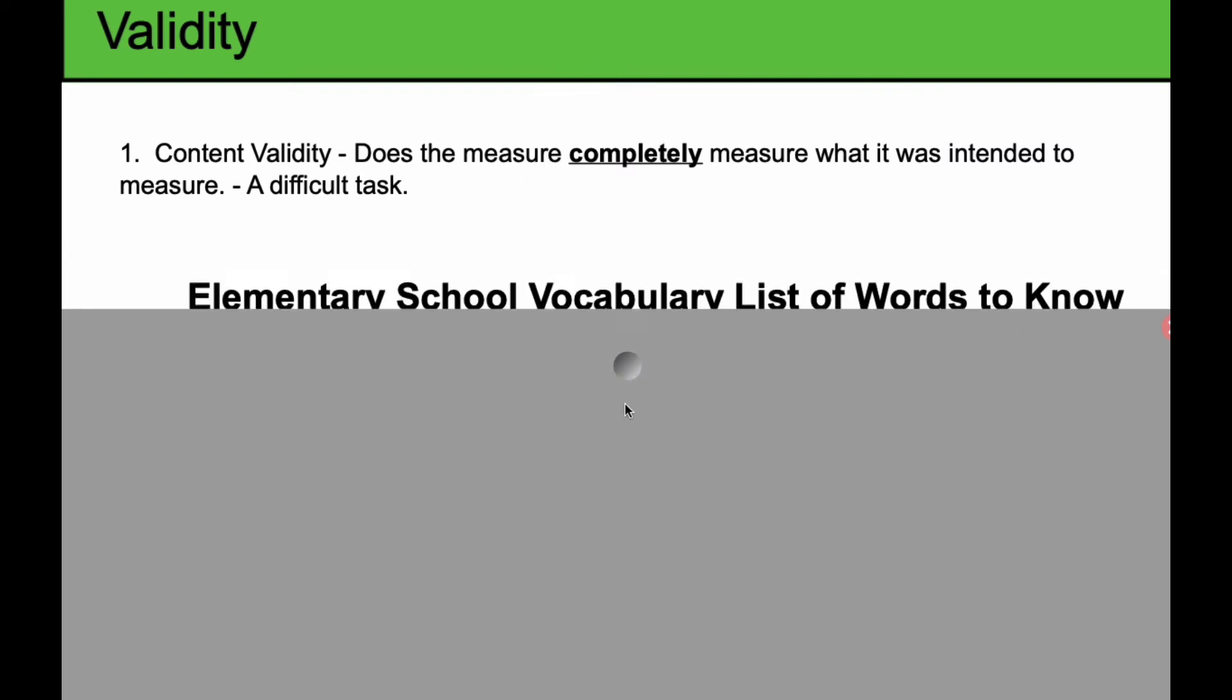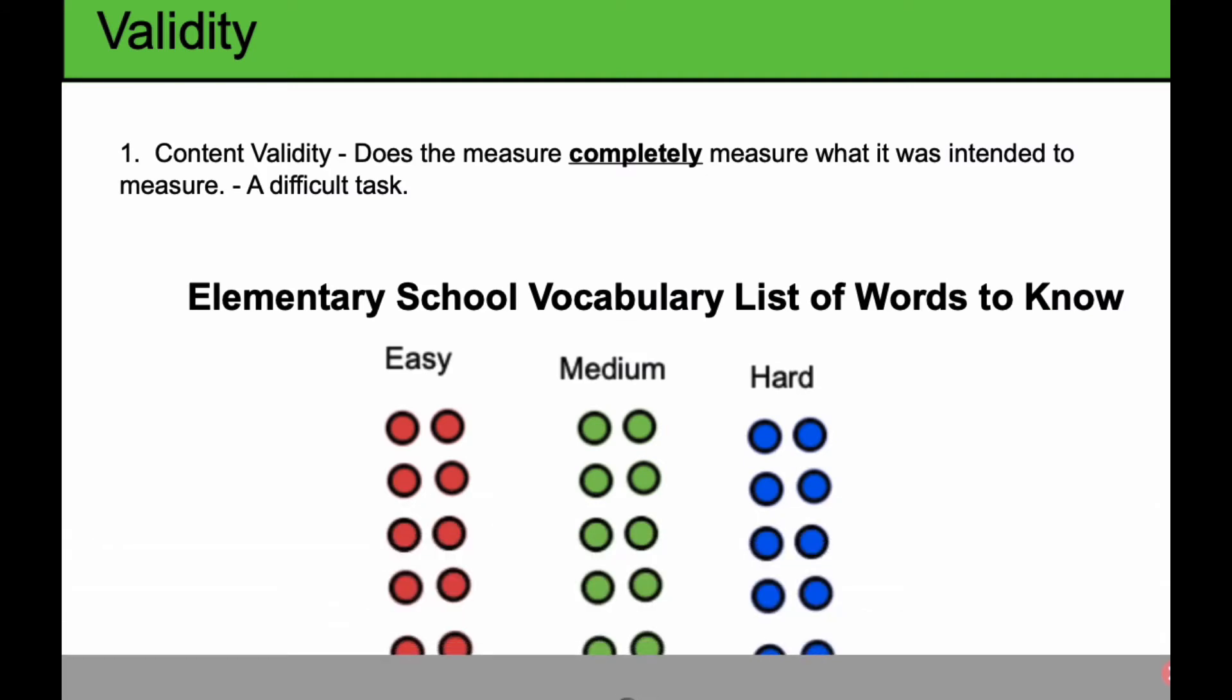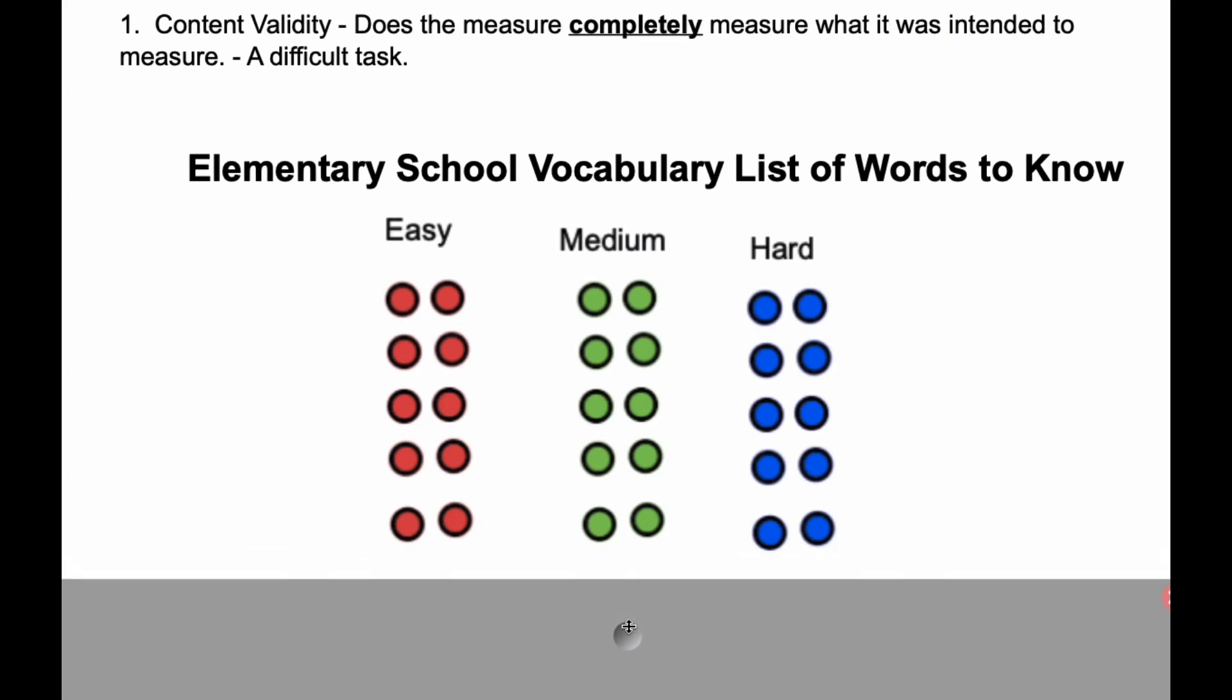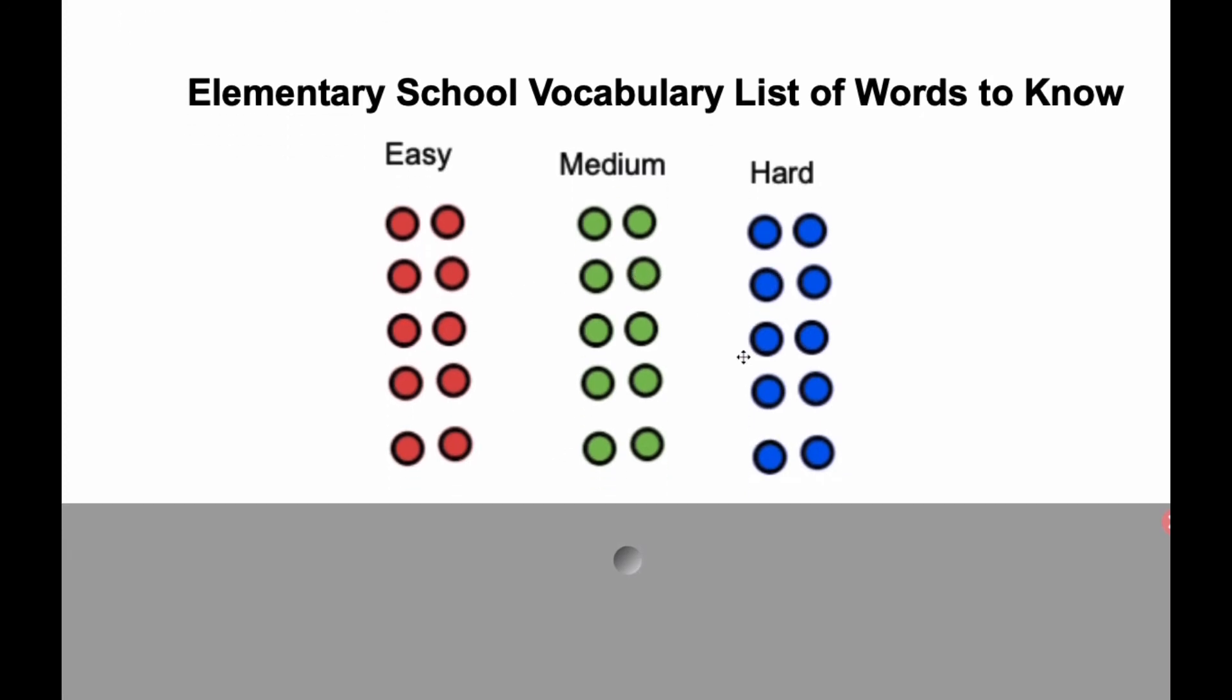Moving on to validity, there's two different kinds of validity that we consider. The first is called content validity. We want to ask, does the measure completely measure what it was intended to measure? This is actually quite a difficult task. Consider this: we have an elementary school vocab list of words they have to know. There's 10 easy words, 10 medium words, and 10 hard words. If we come along in this test, I'm going to give two different vocabulary tests for this.